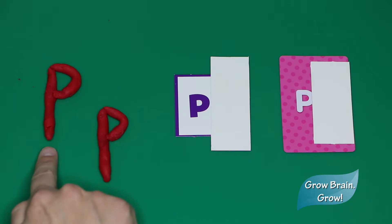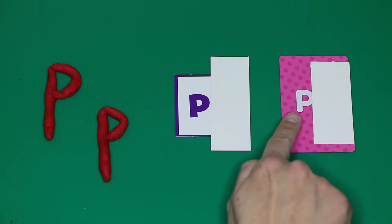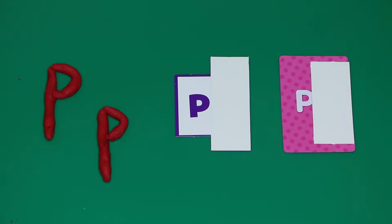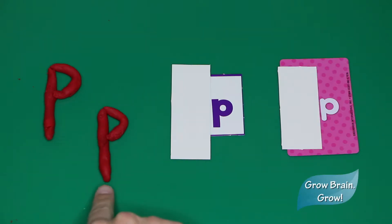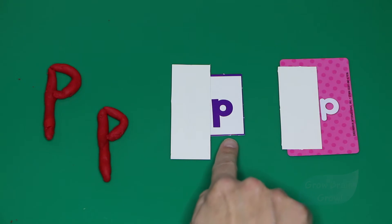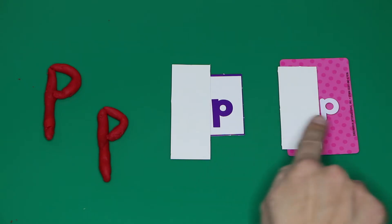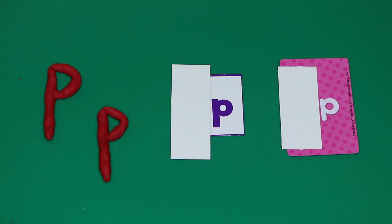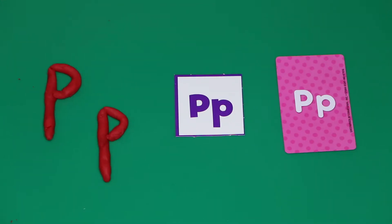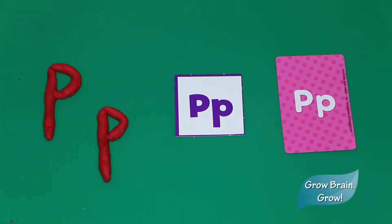This is uppercase P. Can you take his picture? Great job, put your camera away. This is lowercase P. Can you take his picture? Now we can recognize uppercase and lowercase P. I know you — you're letter P.